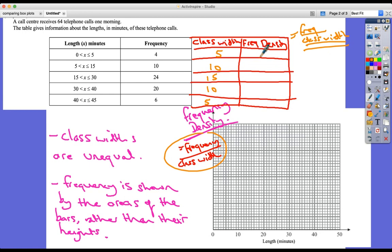So 4 fifths is 0.8, 10 divided by 10 is 1, 24 divided by 15 is 1.6, then we've got 20 divided by 10 which is 2, and we've got 6 over 5 which is equal to 1.2. Okay, so now the frequency density is represented on the y-axis. We only actually have to go up to 2, so we could go 0.5, 1, 1.5, and 2.